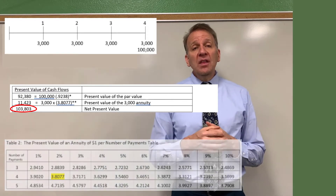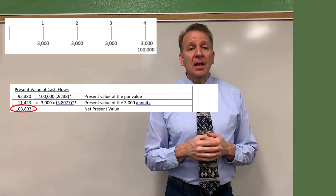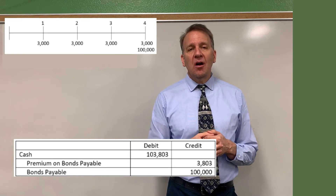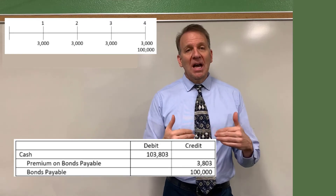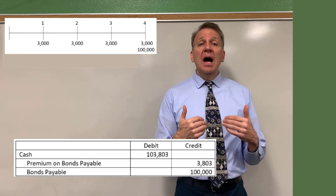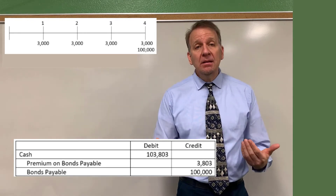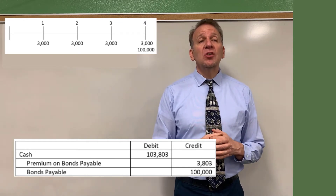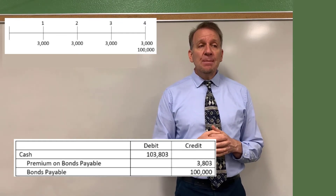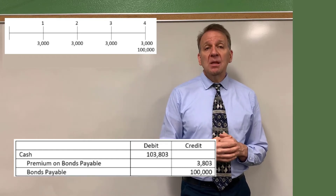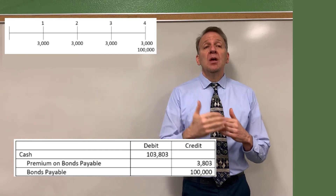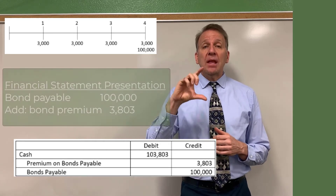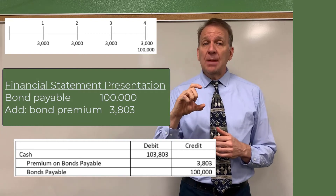When we sell these bonds, we debit cash one hundred and three thousand eight hundred and three dollars. We credit bonds payable one hundred thousand dollars, because that's what they'll pay out at the end of the two years. We also credit premium on bonds payable three thousand eight hundred and three dollars, because the bonds are selling for more than the hundred thousand. The bonds payable and the premium account go together on our balance sheet in the liability section.